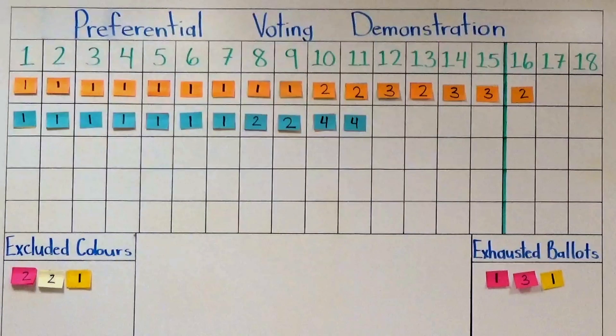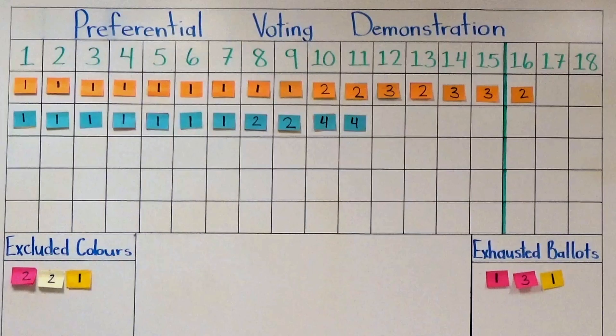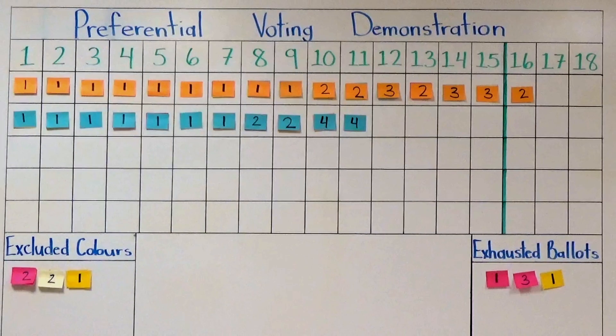Following this redistribution, it is clear that orange has enough votes over the 50% margin to have a majority and be declared the winner. This is preferential voting.